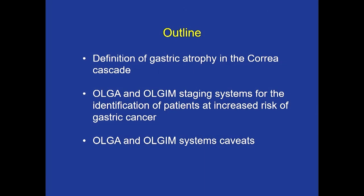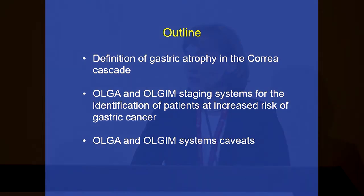First, I'm going to make a brief definition of gastric atrophy in the Correa cascade. Second, I will describe the OLGA/OLGIM system for the identification of patients that could benefit from surveillance. And third, some caveats of these classifications.